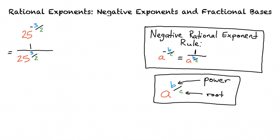We can go either way with this. We can take 25 to the third power and then take the square root of that, or we can take the square root of 25 first and then raise that to the third power. In this case, we will take the square root first, and then raise to the power. We can rewrite the denominator as 1 over the square root of 25 raised to the third power.